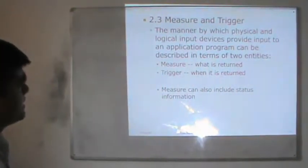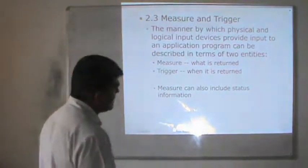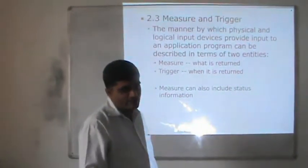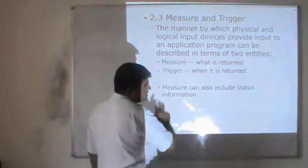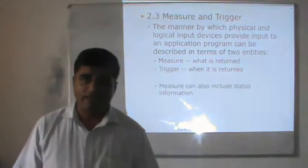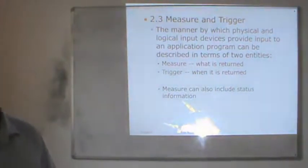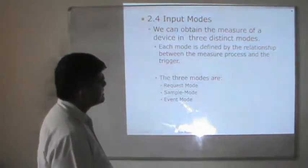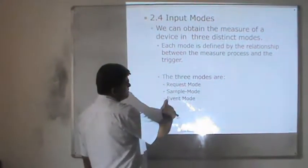Next is measure and trigger. The manner by which physical and logical input devices provide input to an application program can be described in terms of two entities. One is called measure — what is returned — and the other is called trigger — when it is returned. Triggering takes place at a particular period of time, so the trigger is time-based. Measure can also include status information. We can obtain the measure of a device in three distinct modes: request mode, sample mode, and event mode.